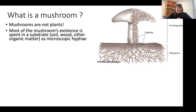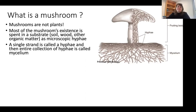Most of a mushroom's existence is spent in a substrate, and a substrate is something like soil, wood, or other matter. They live as microscopic hyphae, which means we can't see them with our eyeballs - we have to use microscopes to see them. A single strand, like in this picture, is a hyphae. If they are in a group, we call them mycelia - it's a lot like the plural form of certain words, like goose and geese; it's a different word.